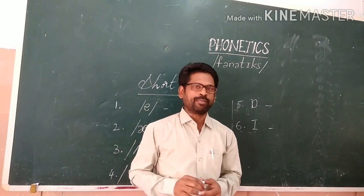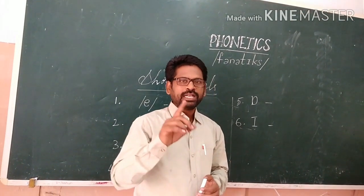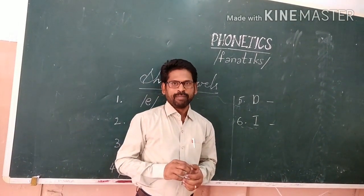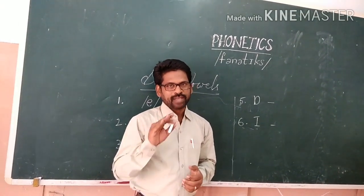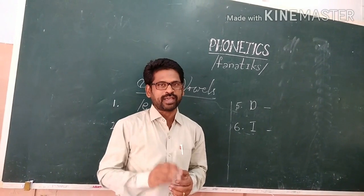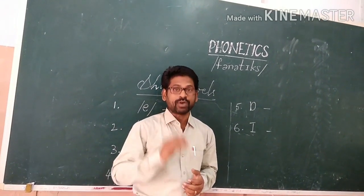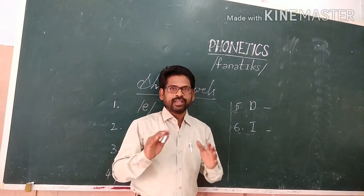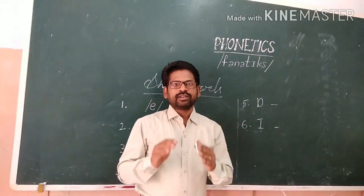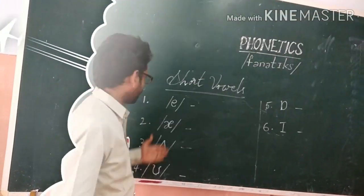Let's go into the topic. There are 26 alphabets in English, but the sounds that we are going to learn are not 26 — they are beyond. 44 sounds are there. In this video, let us discuss just short vowels and long vowels.